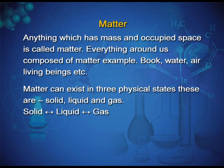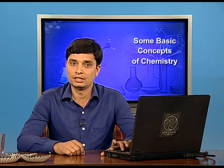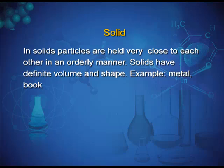Matter can exist in three physical states: solid, liquid, and gas. These three states are interconvertible by changing the conditions of temperature and pressure. In solids, particles are held very close to each other in an orderly manner. Solids have definite volume and shape. Examples: metal, book, etc.